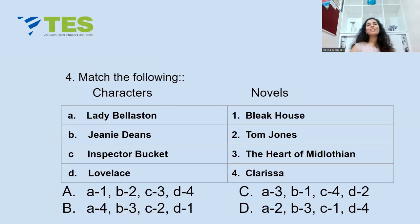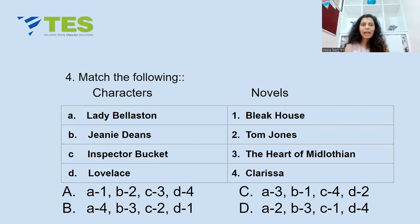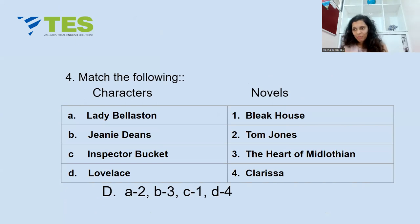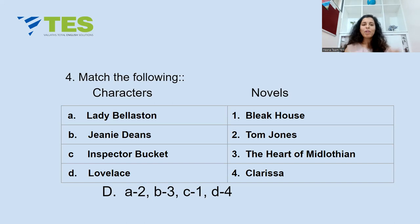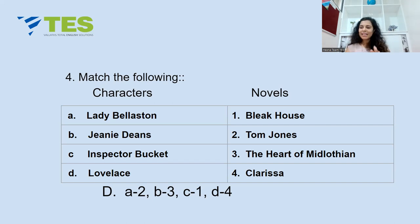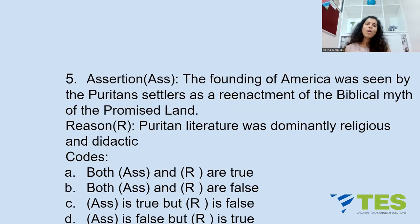Question 4: Match the following characters with their novels. The answer is Option D. Lady Belliston is a character in 'Tom Jones' by Henry Fielding. Jeanie Deans is a fictional character in 'The Heart of Midlothian' by Walter Scott. Inspector Bucket is the detective who solves the mystery in 'Bleak House' by Charles Dickens. And Robert Lovelace is the aristocratic libertine in 'Clarissa' by Samuel Richardson.